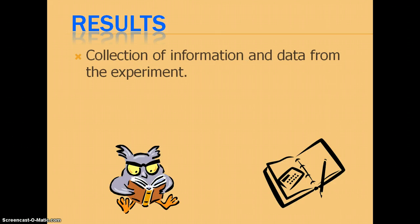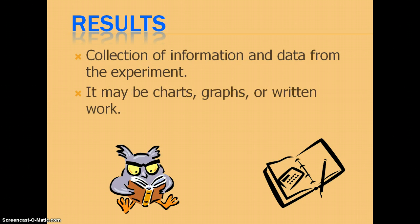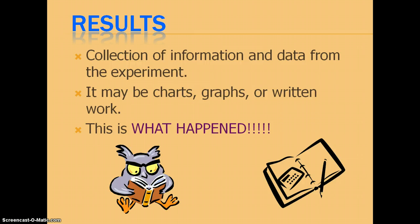Now your results. You have your collection of information and data from the experiment, qualitative and quantitative. You're going to have both information that you have gathered from your experiment. It could be charts, graphs, written work, anything like that can be your results. This is the results part. This is what has actually happened when you ran the experiment.